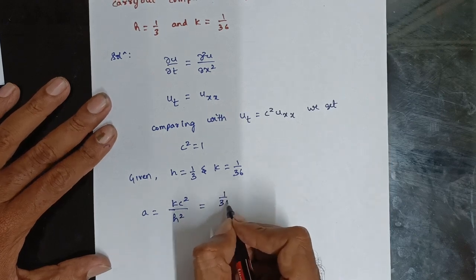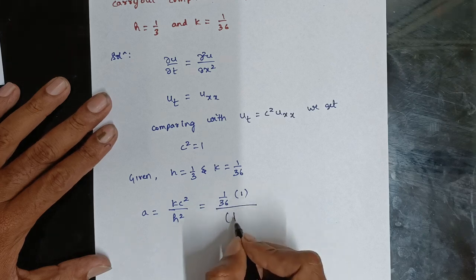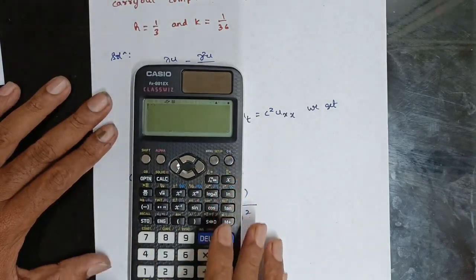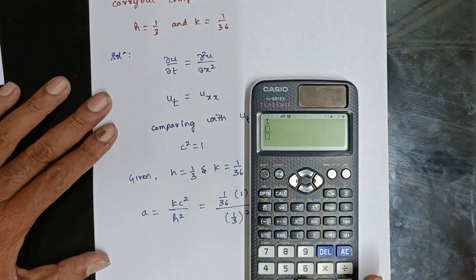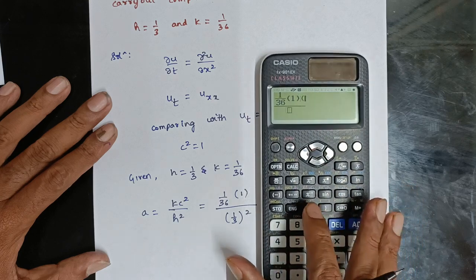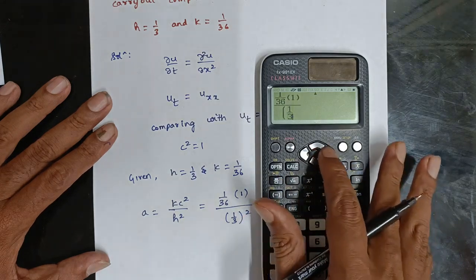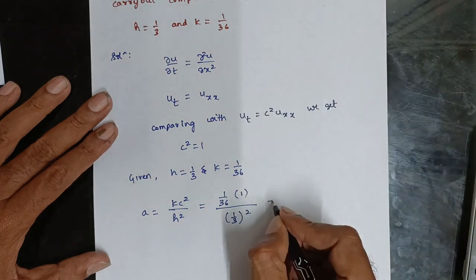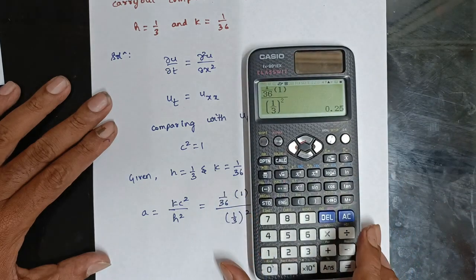We compute λ = k·c²/h² = (1/36) × 1 / (1/3)², which equals (1/36) / (1/9) = 1/4. So the λ value is 1/4, that is 0.25.